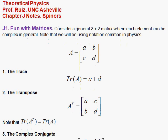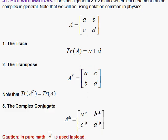The complex conjugate is obtained by taking the complex conjugate of each of the elements in the matrix. Notice that in mathematics you will find a different notation for complex conjugate. We are using the notation that is very common in physics.